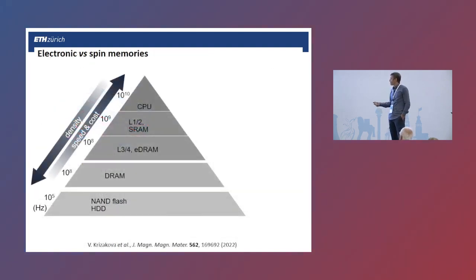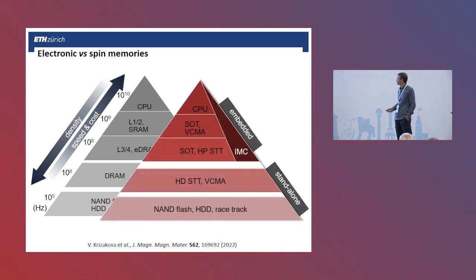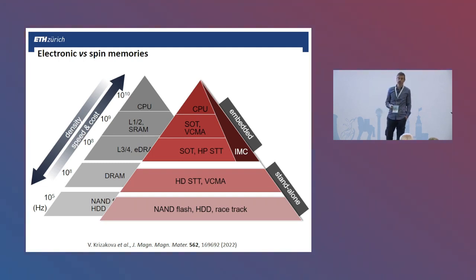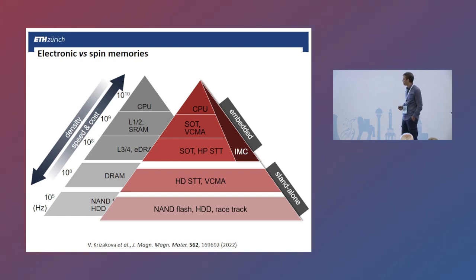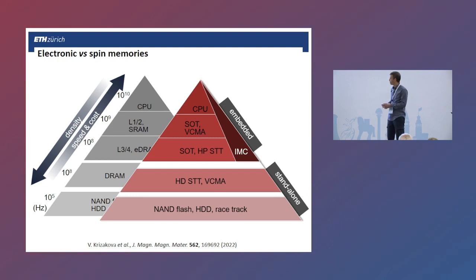Looking at the current architecture of a computer, magnetic materials are basically used for mass storage — hard disk drives storing terabytes of data. It is indeed possible to replace some of the higher-level memories with magnetic equivalents, the advantage being that some of these magnetic memories are non-volatile, implying power savings. Some are also more scalable than SRAM. There are advantages in using spintronic memories, although there are also many challenges, so it is right now too early to say whether this will happen on a massive scale.